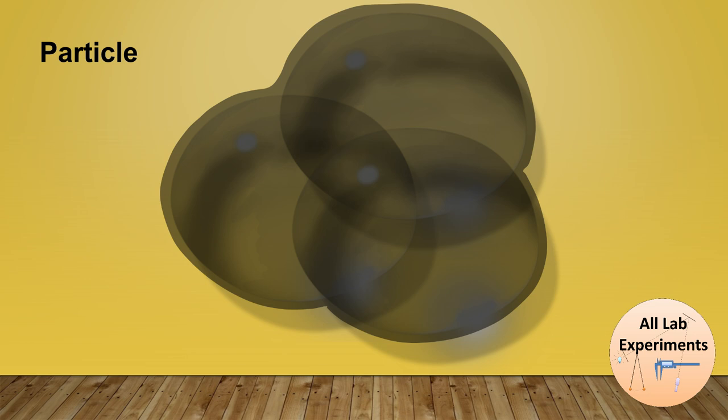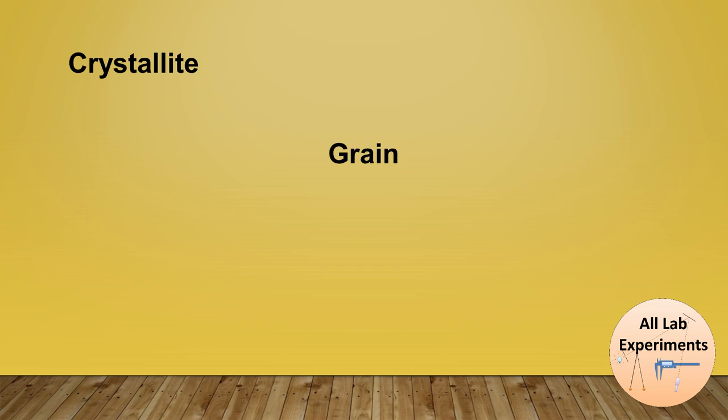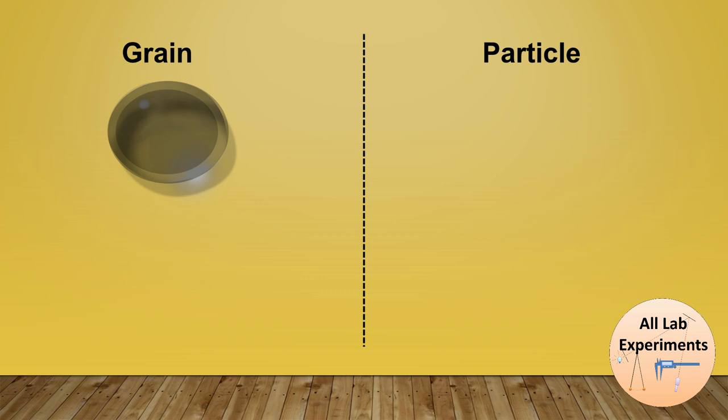So now let us compare a crystallite, a grain, and a particle. So let us start the comparison between grain and the particle. This is a grain by definition you know, and in case when each grain is discreetly present in your sample, in that case your grain is same as your particle. So you can also claim that grain and particle are the same and you can switch between these two definitions.